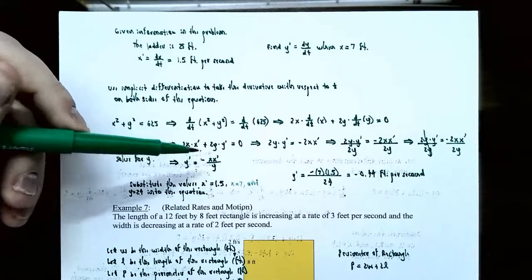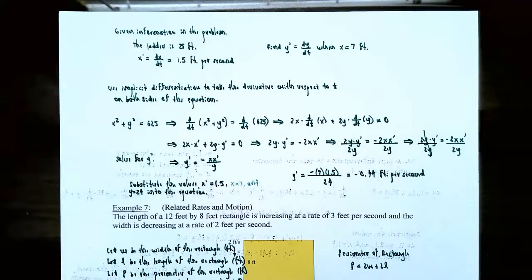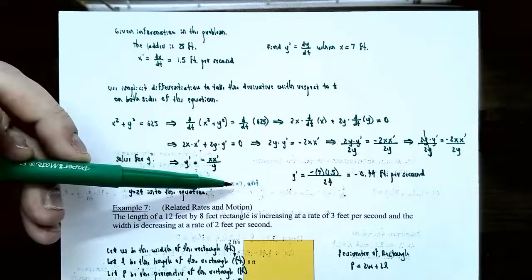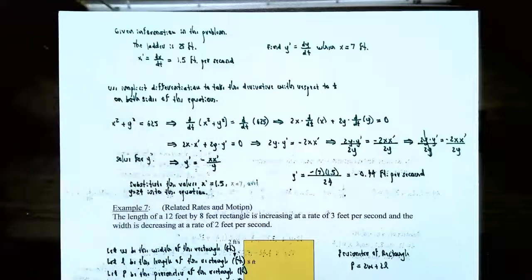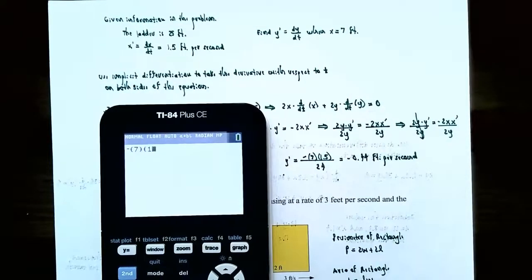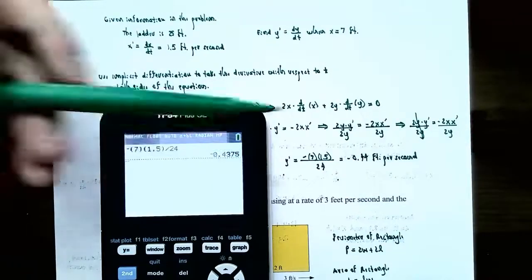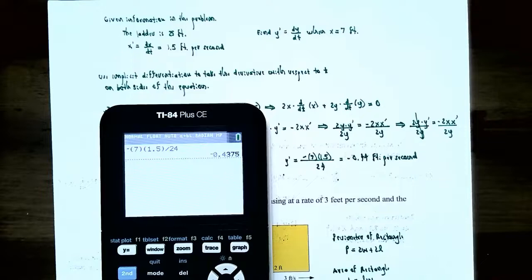Substituting the values: X prime is 1.5, X is 7, and Y is 24. So Y prime equals negative 7 times 1.5 divided by 24, which is approximately negative 0.44 feet per second. Since Y prime is a rate of change, this means the ladder is sliding down the wall at about 0.44 feet every second.